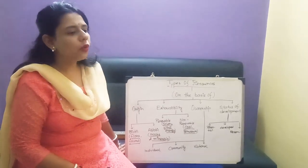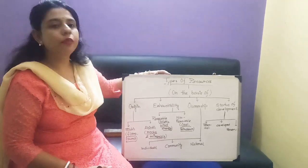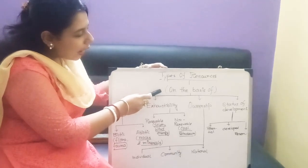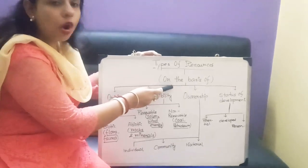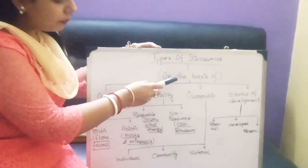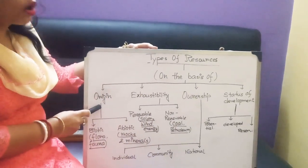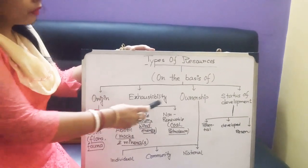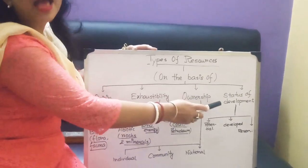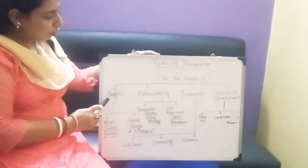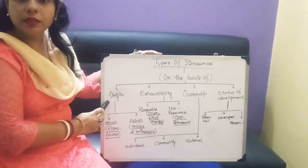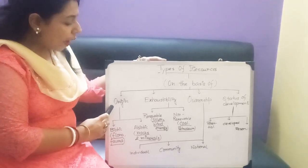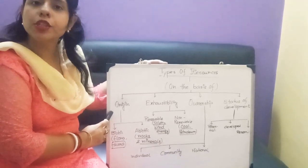Now I am going straight to the types of resource. On this board, I have written the bases of classification. There are four bases: origin, exhaustibility, ownership, and status of development. The first one is origin — that means where a resource originates or is produced from.